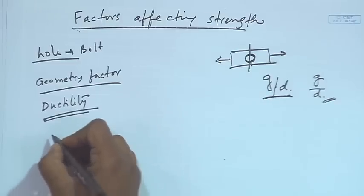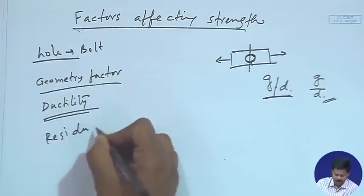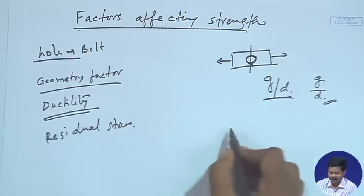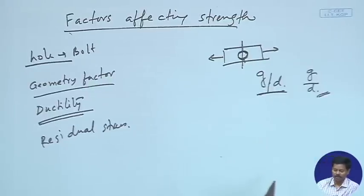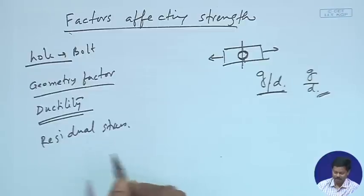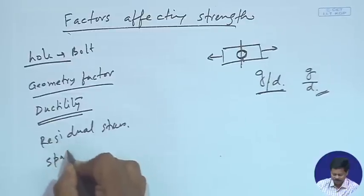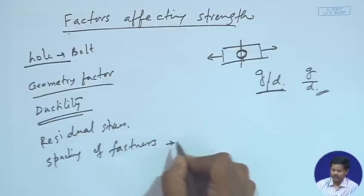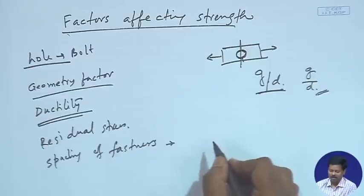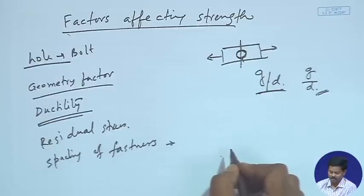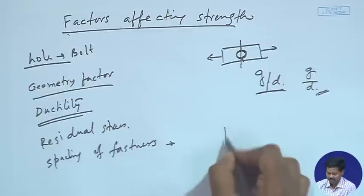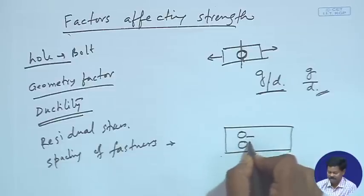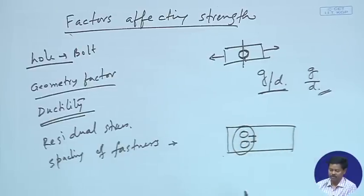Then there is the residual stress factor. If we have residual stress in the member, it has a more pronounced effect where fatigue is involved. In case of fatigue, we have to account for the residual stresses as well. Then spacing of fasteners — if the spacings are closer relative to the diameter, then block shear failure may lead to failure. When a member is connected, if spacing is less compared to its diameter, chances of block shear failure will be there. So that also has to be taken care of.